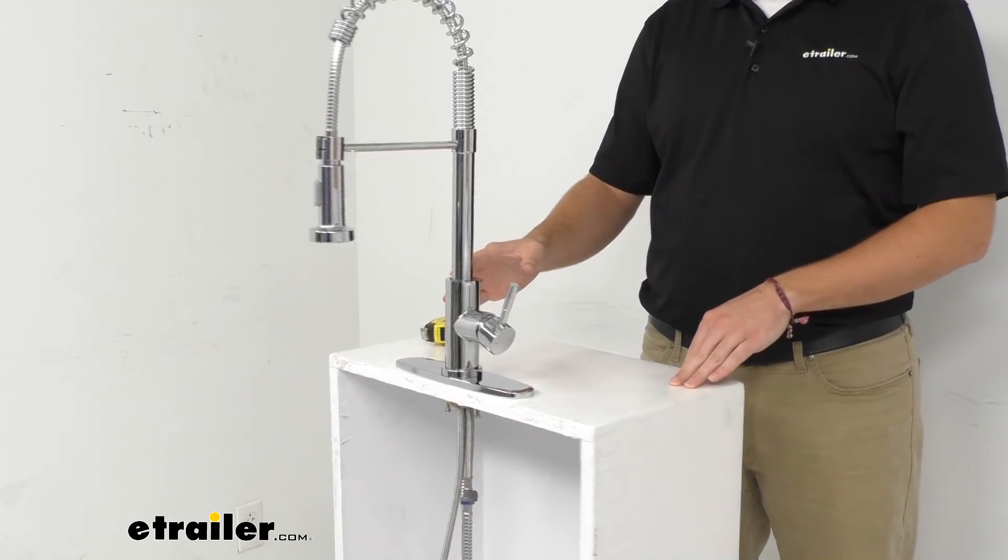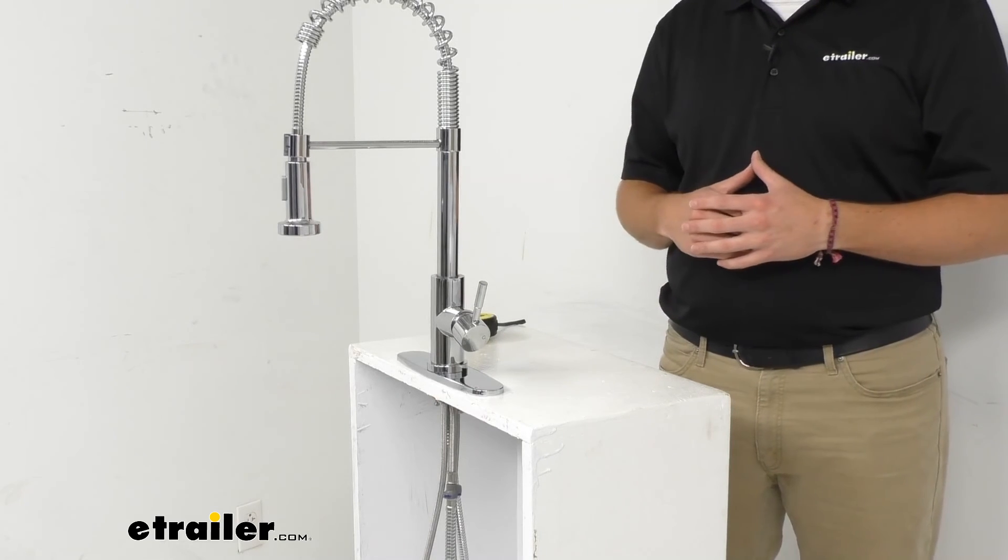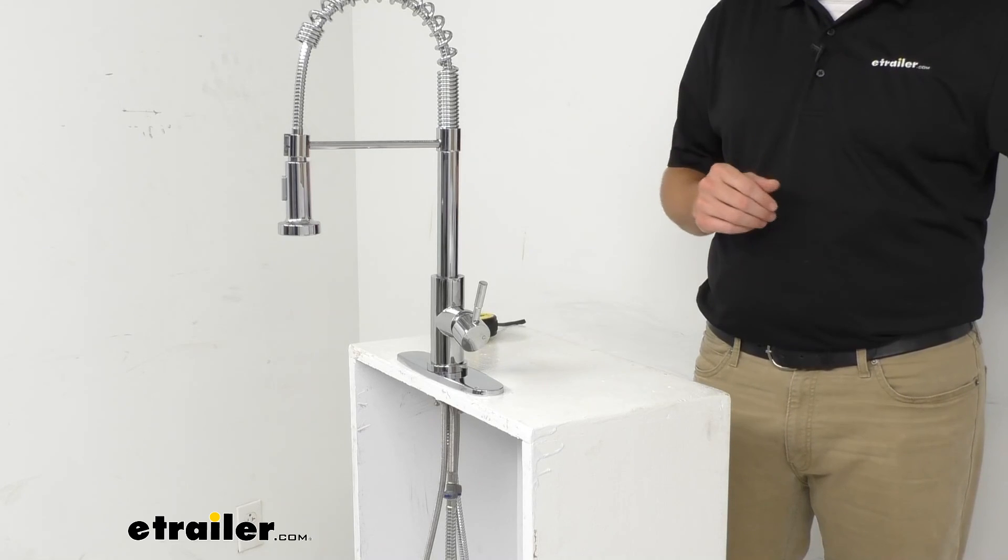Well, I think that about does it for our look at the Empire Faucet Stainless RV Kitchen Faucet with Hammer Style Pull-Down Spout here at eTrailer.com. I'm Bobby. Thank you for watching.